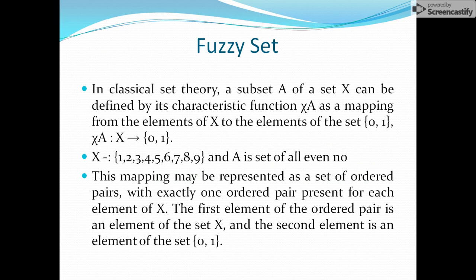As we have discussed that there is a need of fuzzy sets to understand the concept of fuzzy logic. So what fuzzy set is? If you are talking about classical set theory, a subset A of set X, here A is a subset and X is a set. How can we define it by its characteristic function? That is termed as χA here. That is mapping from element of X to the elements of set {0, 1}. This is very important, the mapping of element of X to the element of 0 and 1. That means if you want to find out if some element of subset A is there in set X, then that element will be mapped with 0 or 1. If 0 is there, that means it is not the member of A. And if it is 1, that means yes, it is.